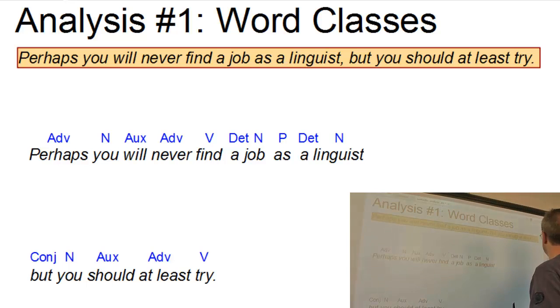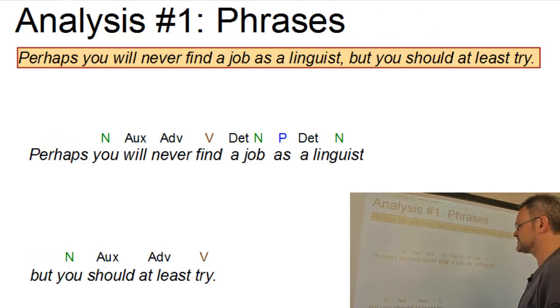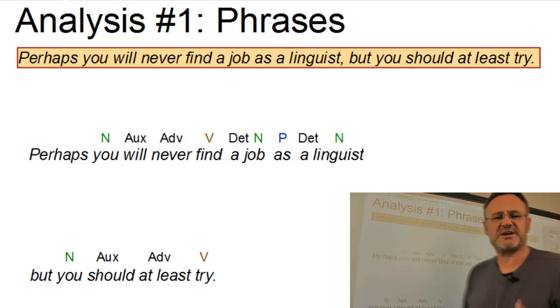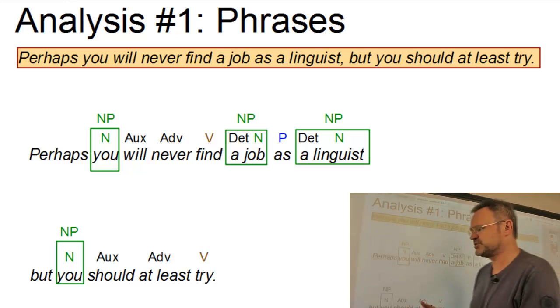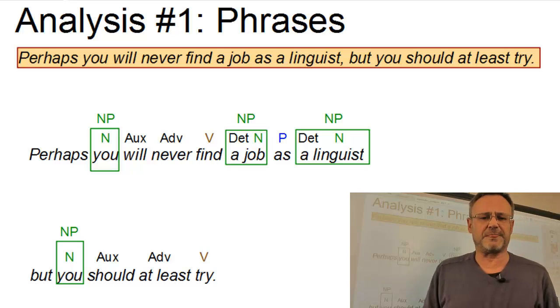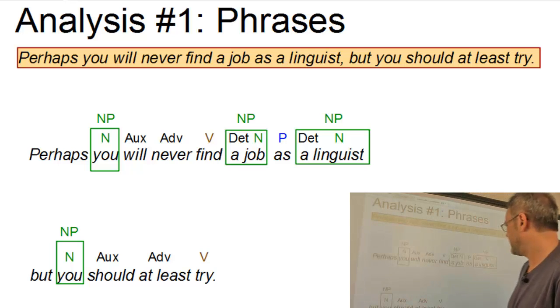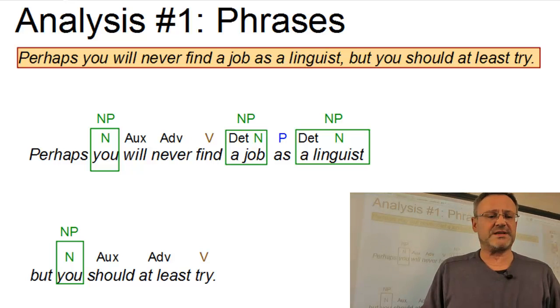Let's now look at the phrases in our sentence. And as you can see, I already marked those elements in a different color, which can serve as heads of their phrase. The four nouns, for example, are all heads of their noun phrases. Two of them are absolutely simple, with just a pronoun. And two of them, a job and a linguist, have pre-modifiers, in their cases the determiner a.